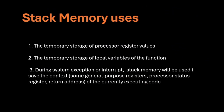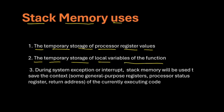The main uses of stack memory are: first, temporary storage of processor register values — whenever a new interrupt comes, you have to store the status of the processor registers into stack memory. Second, temporary storage of local variables of a function — whenever you jump from one function to another, you store the local variables of the first function in the stack. Third, during system exception or interrupt, stack memory is used to save the context of the currently executing code — this is related to task scheduling, which we'll discuss more later.